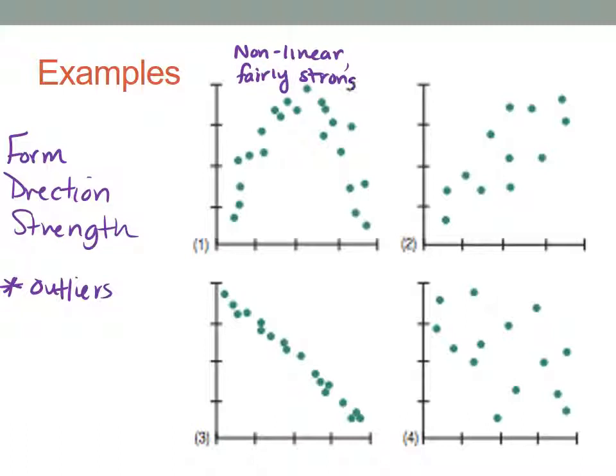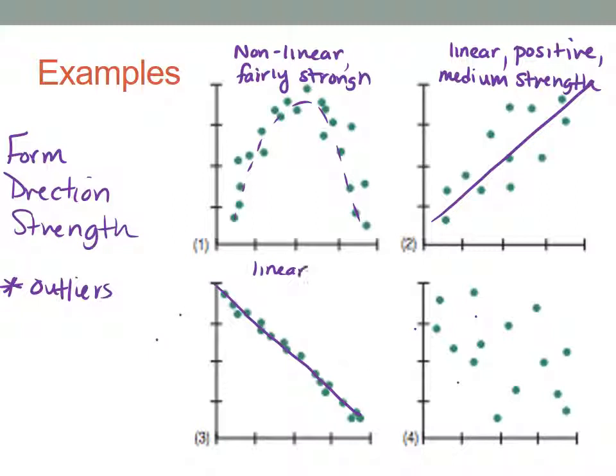Let's move on to number two. If we were to draw a line, we'll say it's linear. The line is going up from left to right so it's positive, and it's like a medium strength. This is a judgment call, but we will later have a measurement of strength. Let's look at number three. It definitely looks linear. My line is going down from left to right so it's negative, and it's very strong - those points are very clustered along that line. Finally, this last scatter plot shows a very weak relationship; no real pattern is emerging.